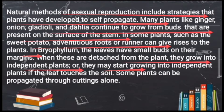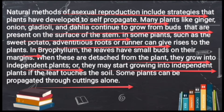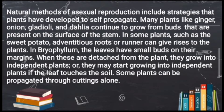The buds may start growing into independent plants if the leaf touches the soil. When the Bryophyllum buds mature and fall onto the soil — touching the soil — after a period of time, after absorbing nutrients from the soil, they develop into a plant. Some plants can also be propagated through cutting alone, like money plant.